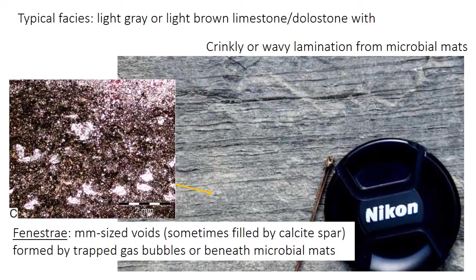Peritidal facies are generally pretty recognizable in outcrop. They're typically light gray or light brown limestones, or often dolostones, usually lime mudstone or very fine-grained. They have thin, crinkly or wavy laminations that probably represent the wrinkled surface of microbial mats growing on the tidal flat. There may be millimeter-scale oval-shaped voids, possibly filled with calcite spar, called fenestrae — Latin for window. Fenestrae form when gas bubbles from decaying organic matter get trapped beneath the microbial mats, creating a small void space that may eventually get filled with calcite during burial.